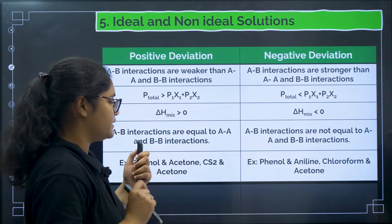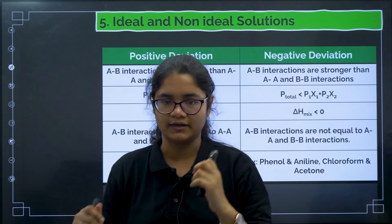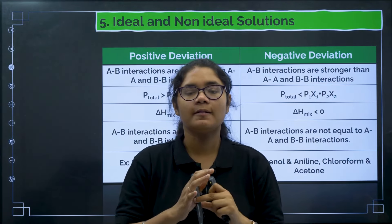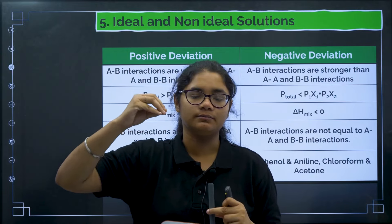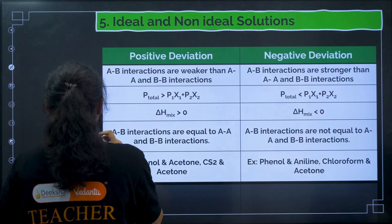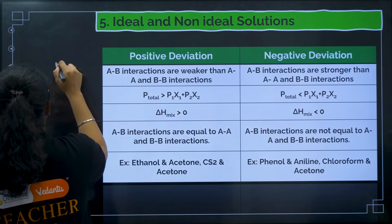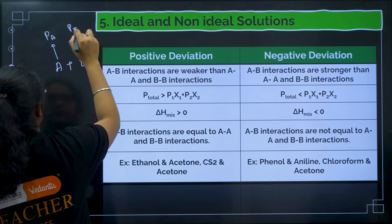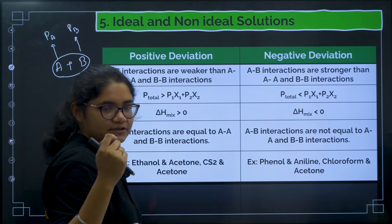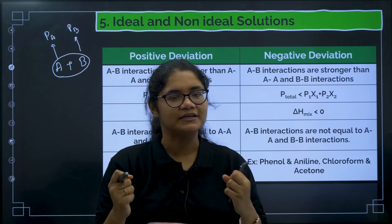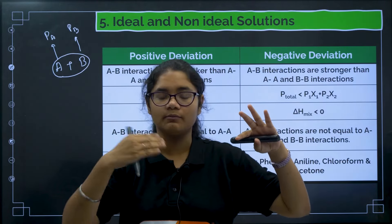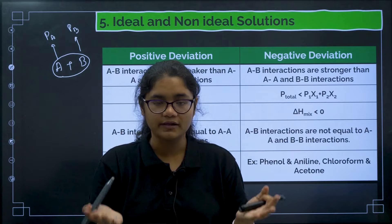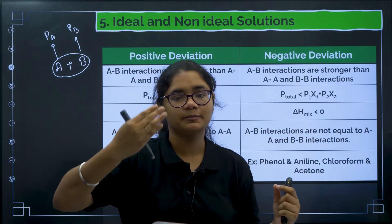Non-ideal solutions are of two types: positive deviation and negative deviation. In positive deviation, AB interactions are weaker than AA and BB interactions. When A and B are mixed, they don't attract each other strongly, so more A and more B evaporate, and the total pressure is greater than PA + PB. In negative deviation, AB interactions are stronger — they become very close friends and don't want to leave each other, so less evaporation occurs and P_total is less than PA + PB.